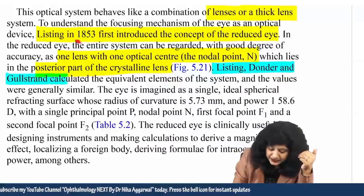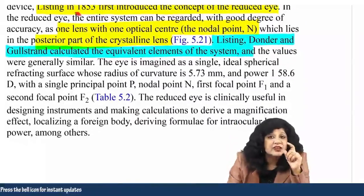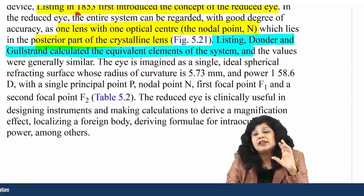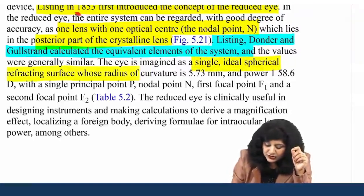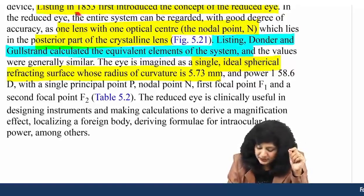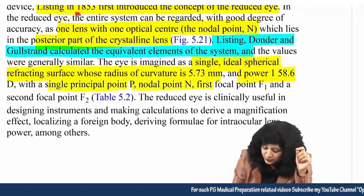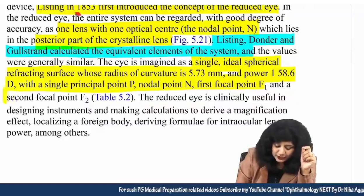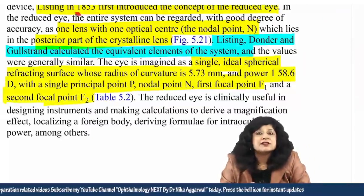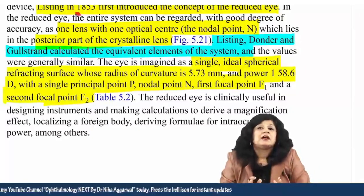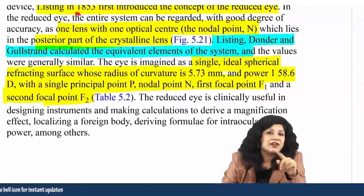Listing, Donders, and Gullstrand — three scientists — calculated the equivalent elements of the system and the values were generally similar. In the reduced eye, the entire system can be regarded with a good degree of accuracy as one lens, one optical center, and one nodal point lying in the posterior part of the crystalline lens.